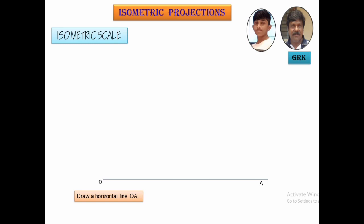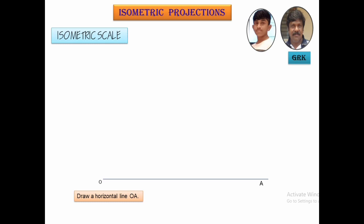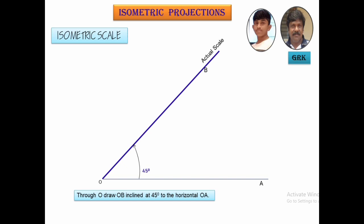How to draw the isometric scale. This is very important to get the isometric projections of any of the models given. First, you draw a horizontal line OA at any one side of the sheet, preferably at the top right-hand corner, then draw a 45 degree line OB, which will be where you're going to mark the actual scale, either in centimeters or millimeters. Now, you're going to draw another line called the isometric scale, which makes an angle of 30 degrees with the horizontal OA.